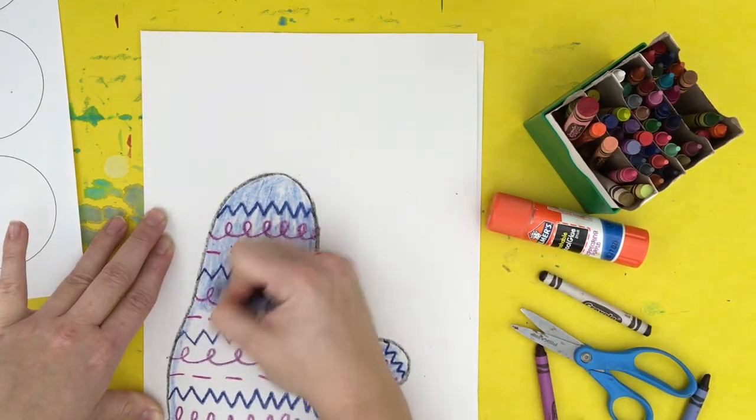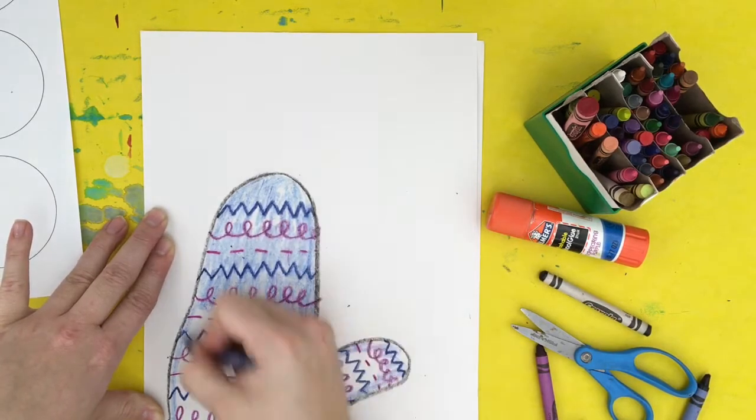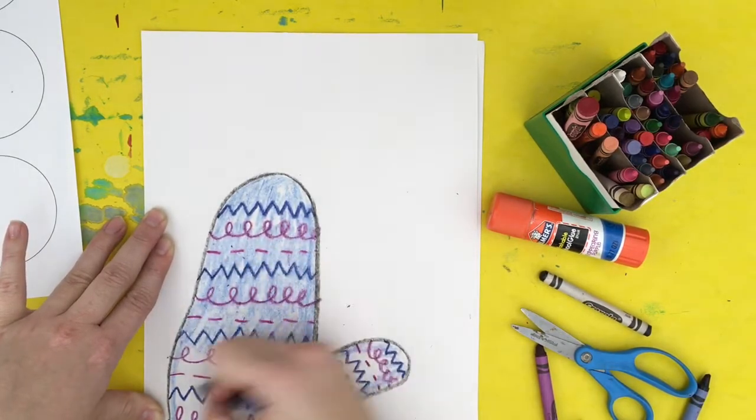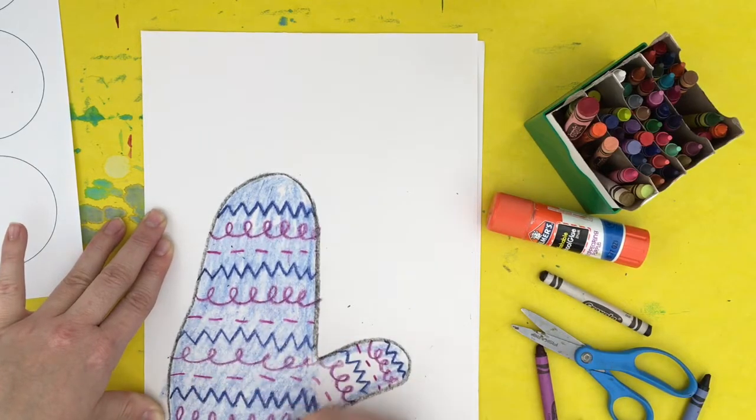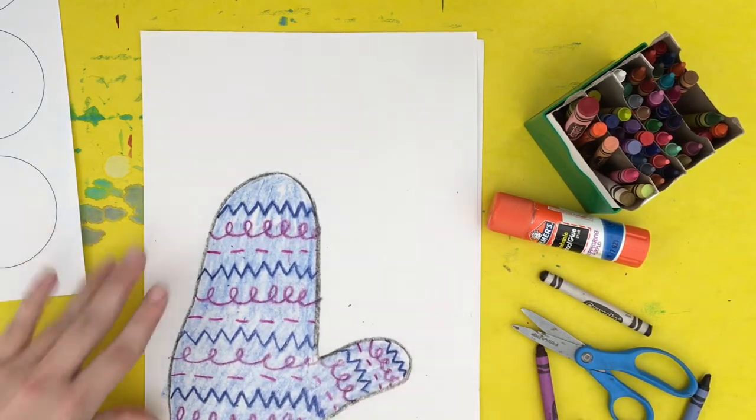I'm going to go up and down with my crayon. One step, two steps, three steps, four steps, until my whole mitten is colored in with no white space. Nice neat coloring.